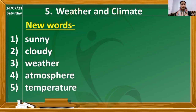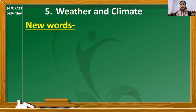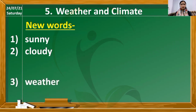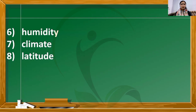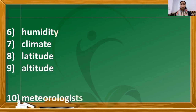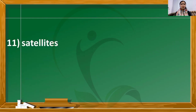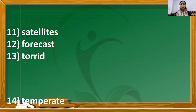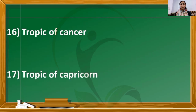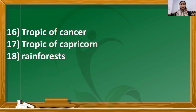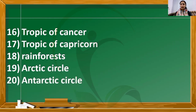Let us check once again whether you have written all the new words: sunny, cloudy, weather, atmosphere, temperature, humidity, climate, latitude, altitude, meteorologist, satellites, forecast, torrid, temperate, frigid, Tropic of Cancer, Tropic of Capricorn, rain forest, Arctic Circle, and Antarctic Circle. So here we have written the 20 new words. Let us now write down the word meanings.